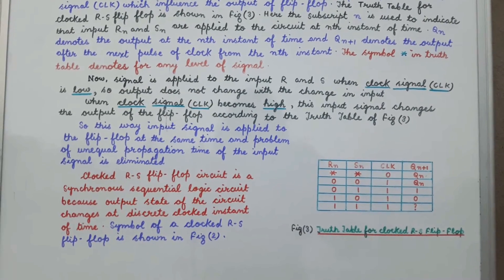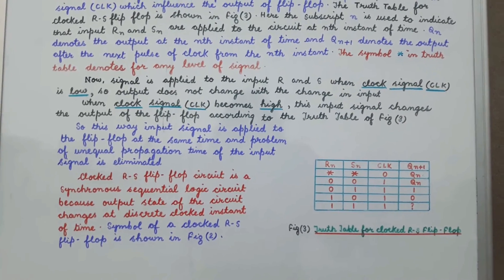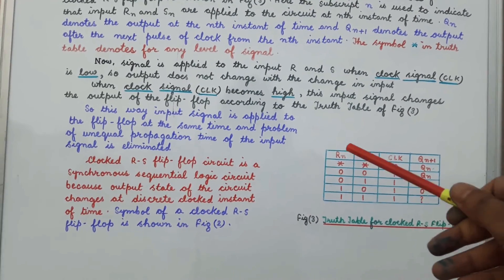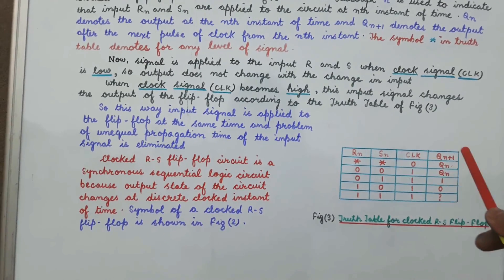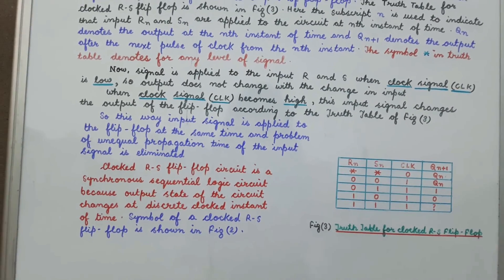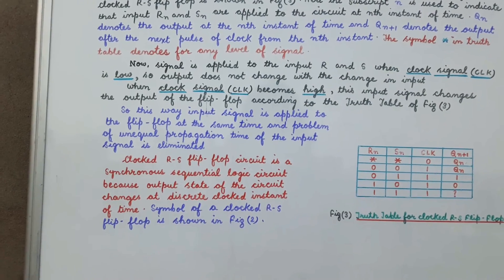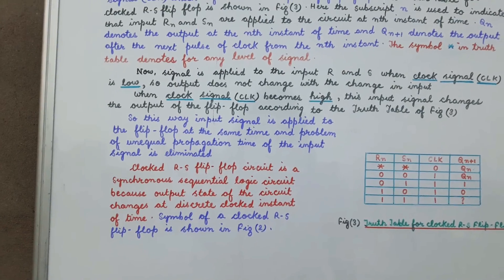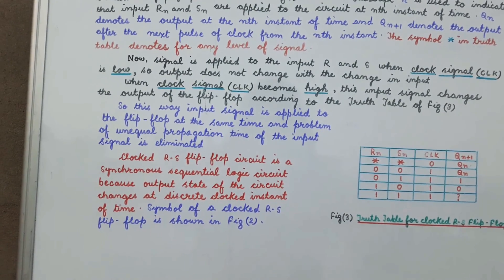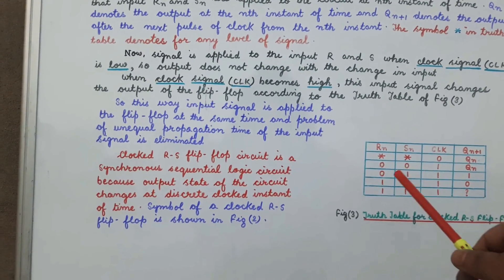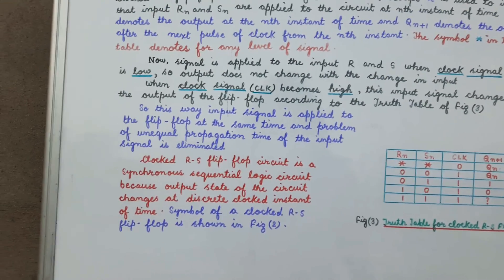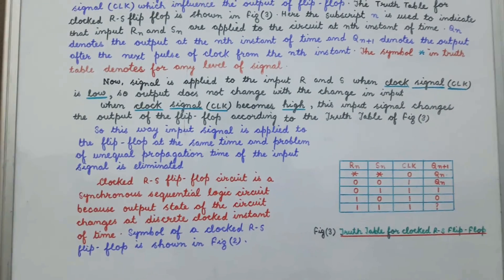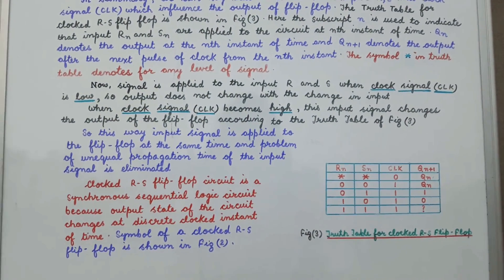When the clock signal goes high, the input signal changes the output of the flip-flop according to the truth table, depending on the values of the input signals. In this way, both input signals are applied to the flip-flop at the same time when the clock value is 1, and the problem of unequal propagation time of the input signals is eliminated.